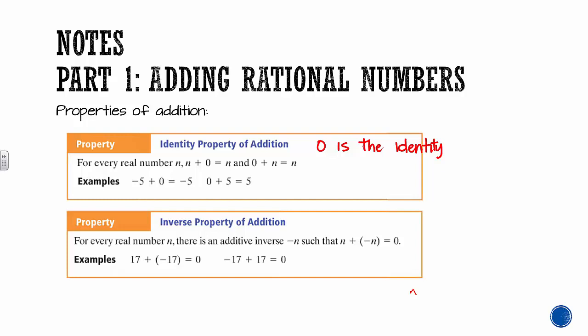The inverse property of addition says that for every real number, there's an additive inverse such that when you add them together, you end up with zero. So 17 is the number — this negative 7 right here is its additive inverse — because when you add them together, you end up with the identity, which is zero.